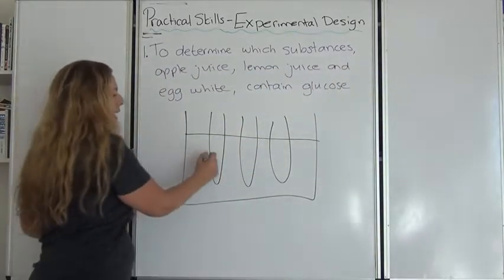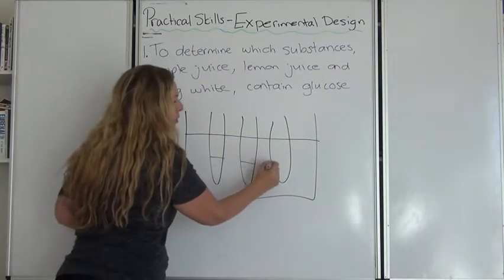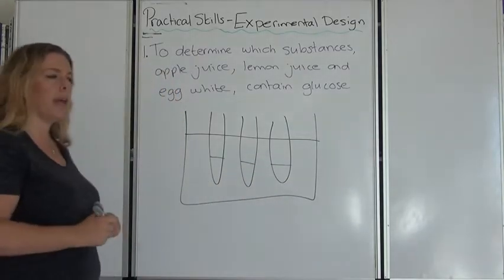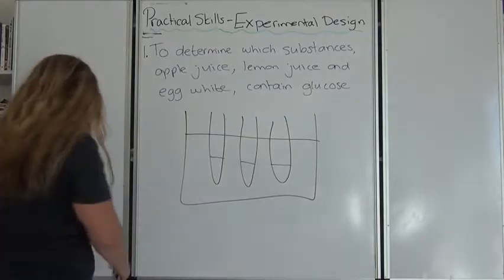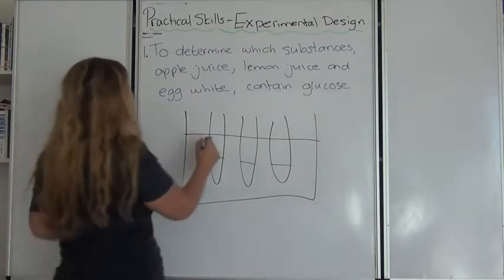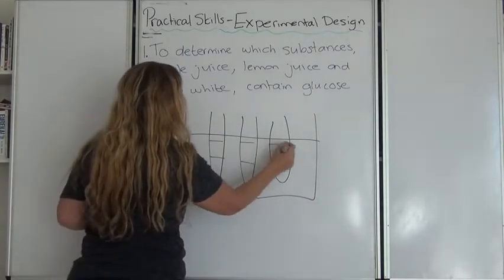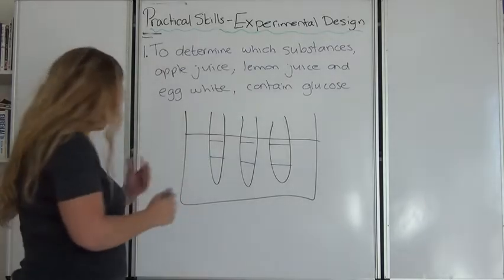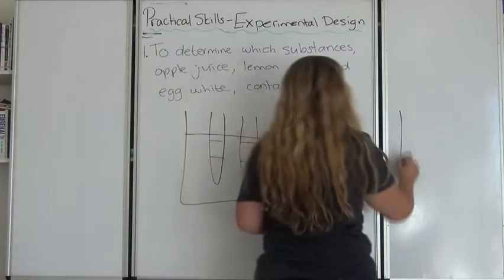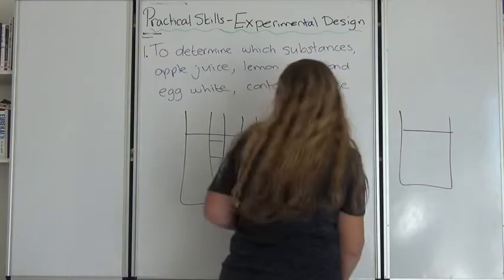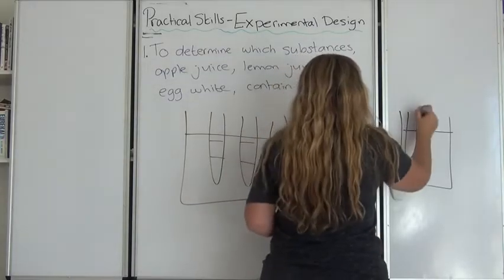You put 10 ml of apple juice, lemon juice, albumin or egg white into those test tubes. Then you're going to add the benedicts to each of those. Okay? Right so there's your benedicts. Then you're going to put them all into a water bath. So here's your water bath. Right with the three test tubes in.